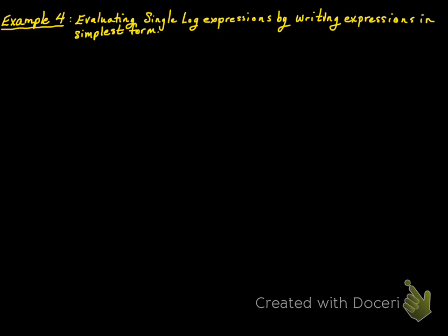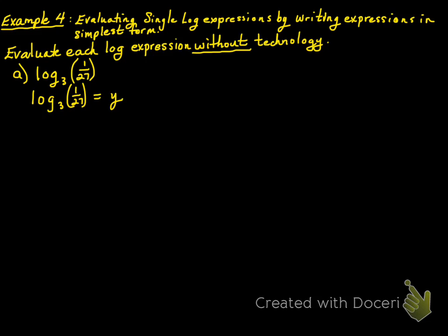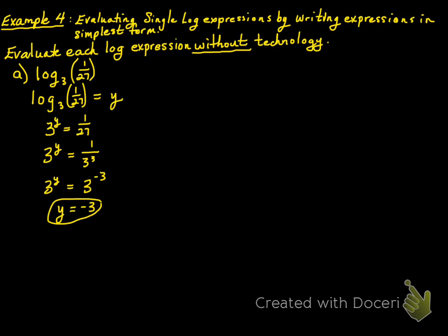In example 4, we're looking at evaluating single log expressions by writing expressions in simplest form — evaluate each log expression without technology. Log base 3 of 1 over 27: log base 3 of 1/27 equals y, so 3 to the power of y has to equal 1/27. We express 1/27 as 1 over 3 to the power of 3, which is 3 to the power of negative 3. Therefore y must equal negative 3.